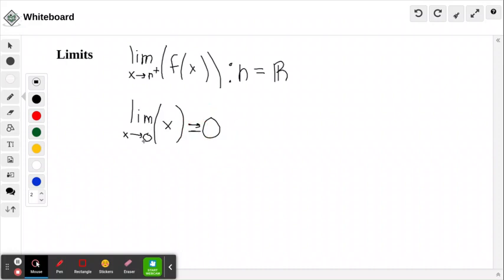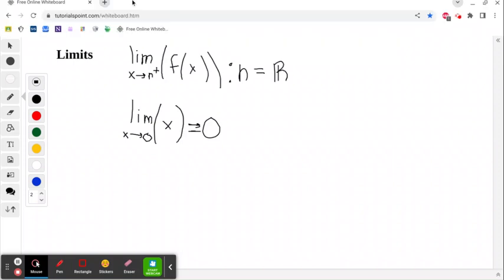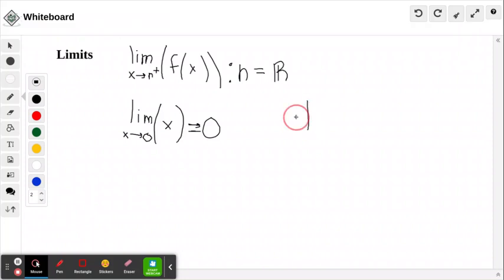And if you think about the line y equals x, which is what this here represents, on one side it approaches zero from above, and on the other side approaches zero from below.